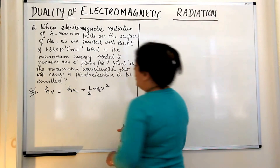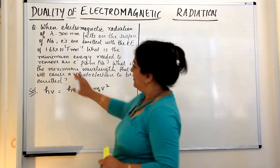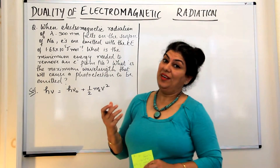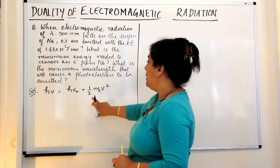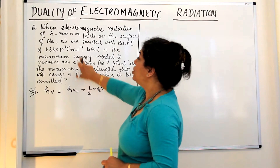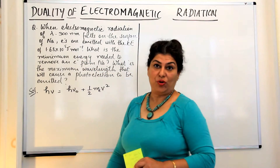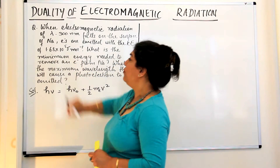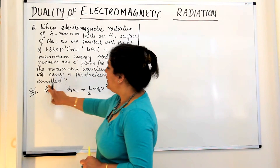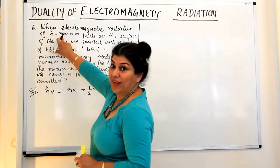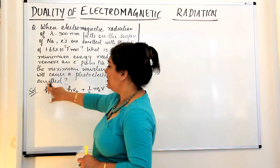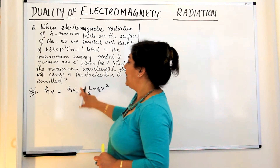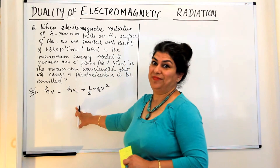We have been given the kinetic energy of 1 mole of electrons, not a single electron. We can calculate energy from the wavelength of the photon, but we will have to calculate it for 1 mole to match the given kinetic energy and find the threshold energy.